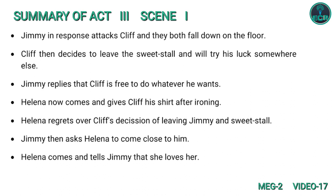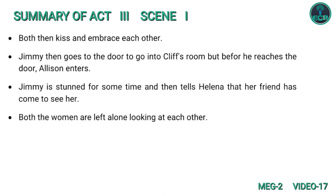Helena gives Cliff his ironed shirt and regrets his decision to leave Jimmy and the sweet stall. Jimmy asks Helena to come close to him. Helena comes and tells Jimmy that she loves him; they kiss and embrace each other. Jimmy then goes toward Cliff's room, but before he reaches the door, Alison enters. Jimmy is stunned and tells Helena that her friend has come to see her. Both women are left alone, looking at each other.